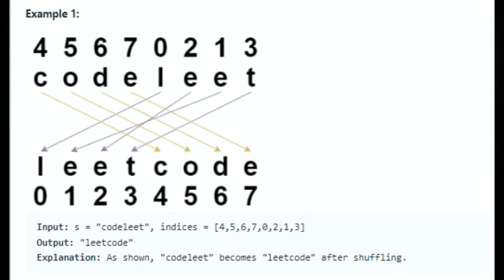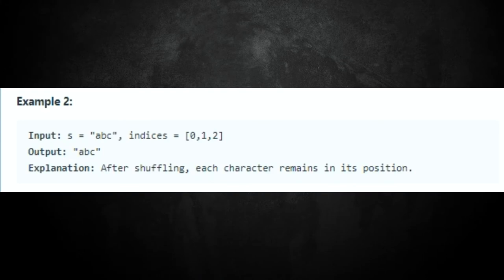You can see these indices matching up with the letters. When you shuffle them, that 'C' actually goes with that four, so when you're shuffling you put it in order of what that word looks like. We're given the input 'coil' and indices of four, five, six, seven, and once you shuffle those the letters respond respectively to their indices. For example two, the string is 'abc' with indices zero, one, two, so the output remains the same.